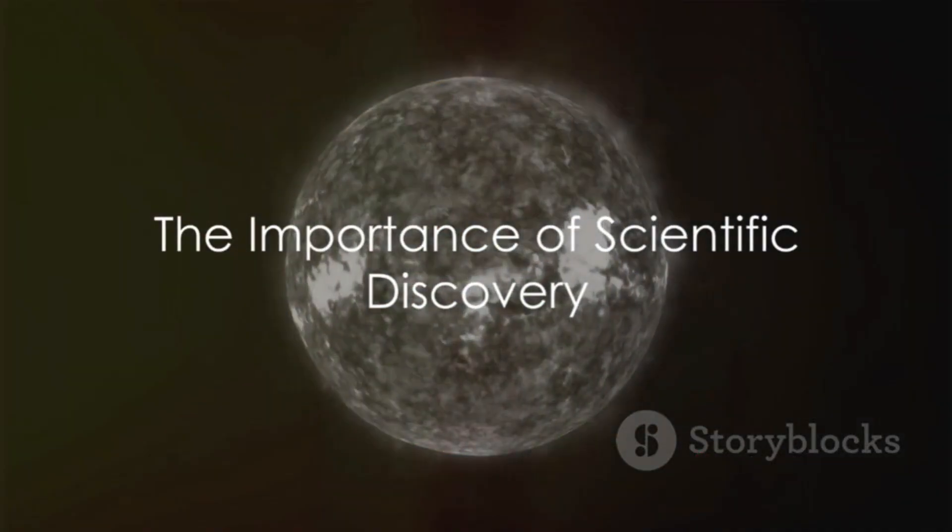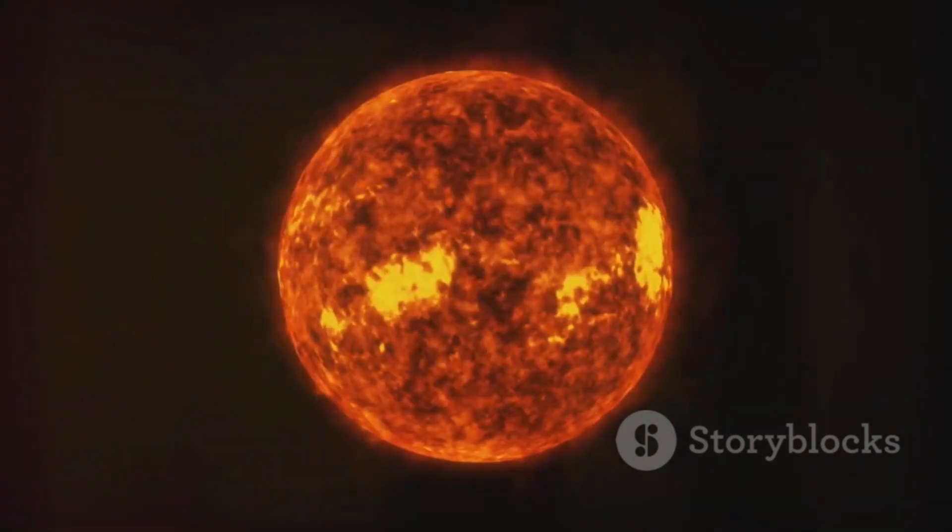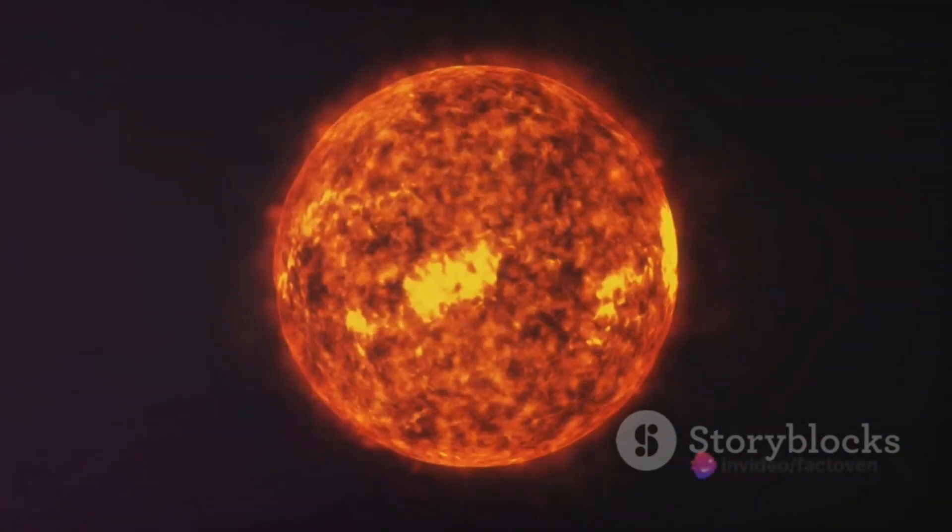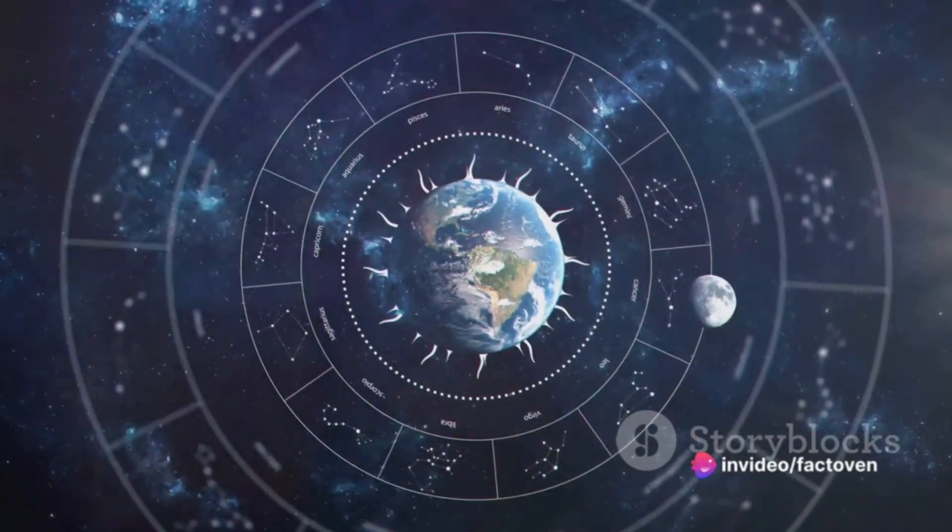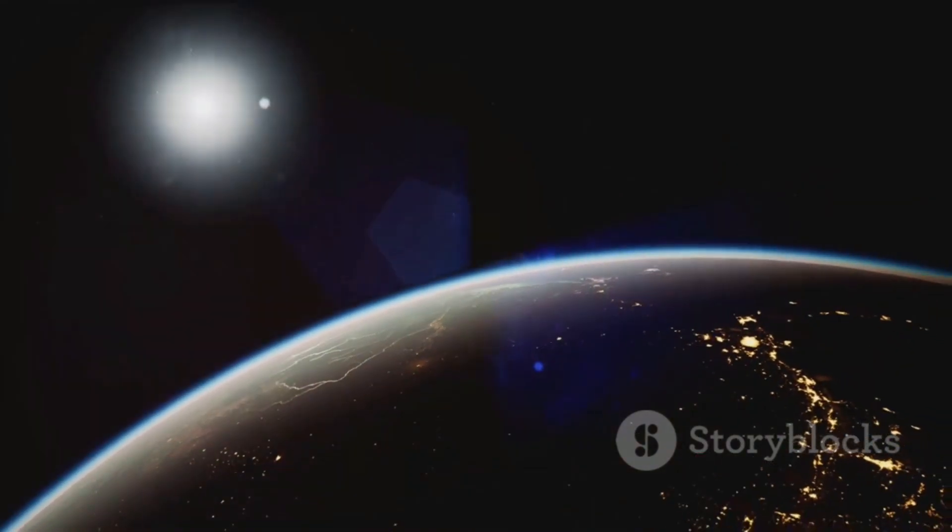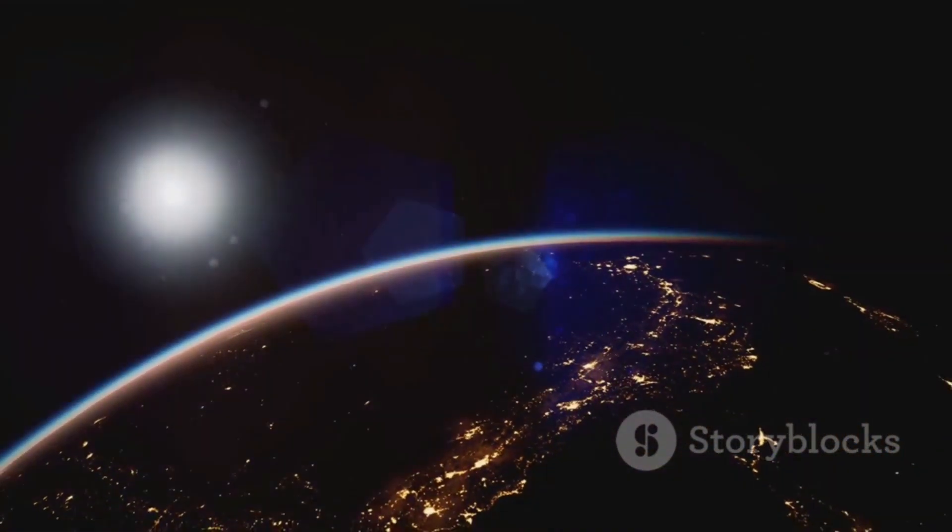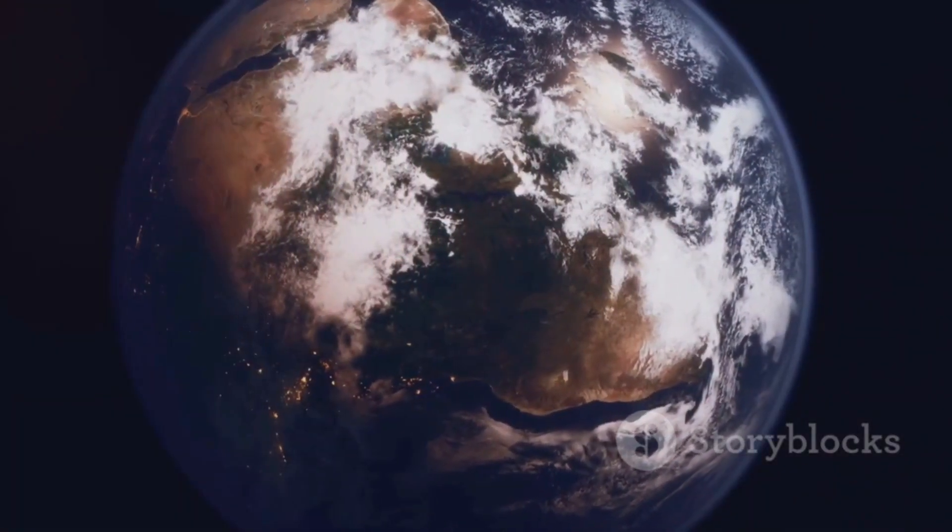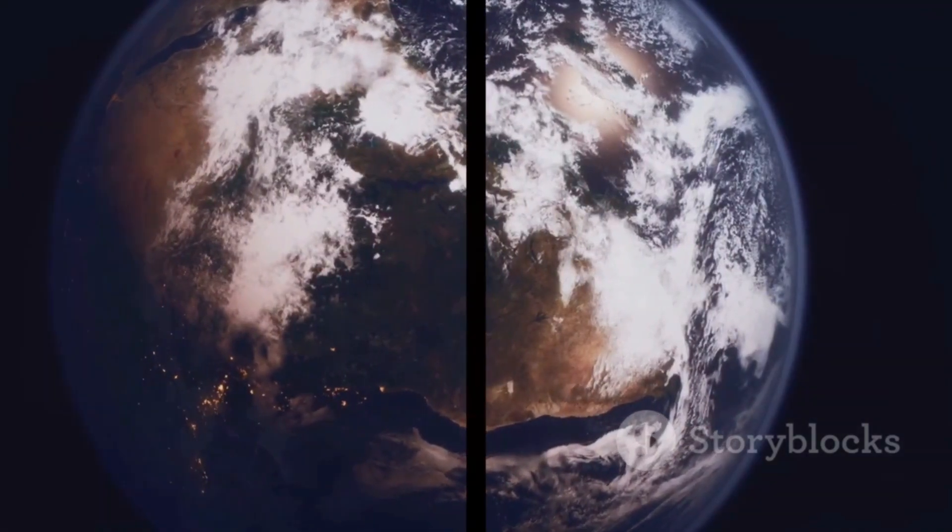So, while the thought of the Sun orbiting the Earth might seem intriguing, it's clear that the consequences would be far-reaching and profound. It's a testament to the importance of scientific discovery, from the radical ideas of Copernicus, to the observations of Galileo, and the laws of Kepler, that we understand the solar system as we do today. It underscores just how crucial it is that the Sun, not the Earth, sits at the center of our solar system.